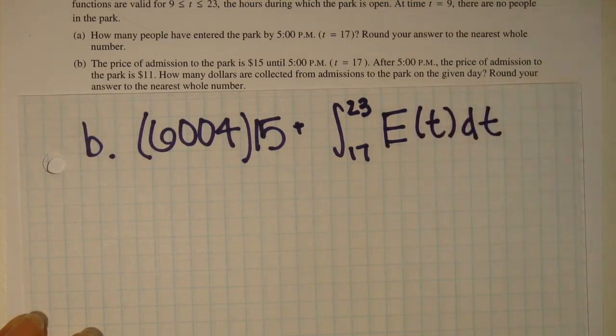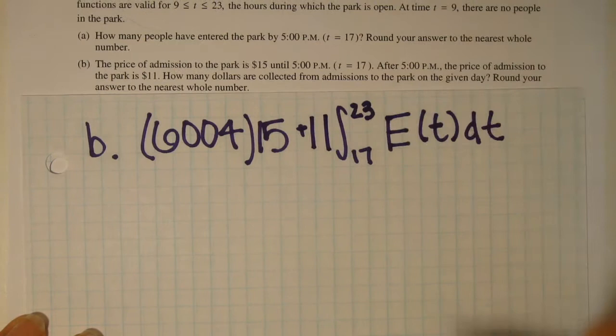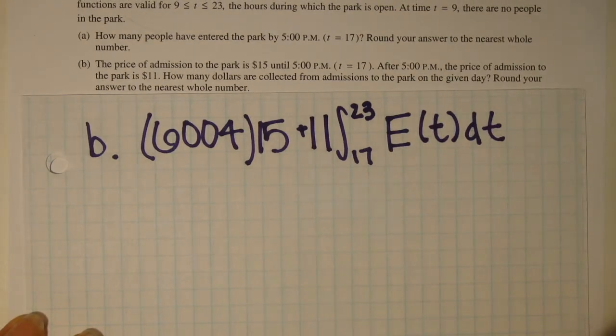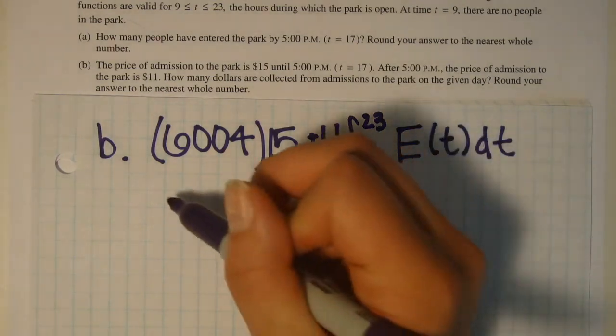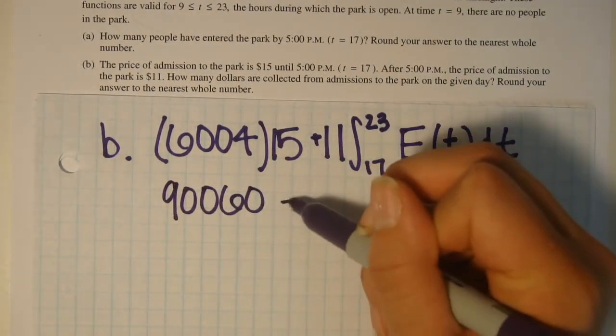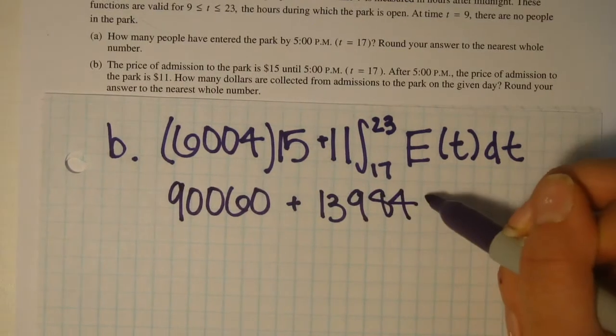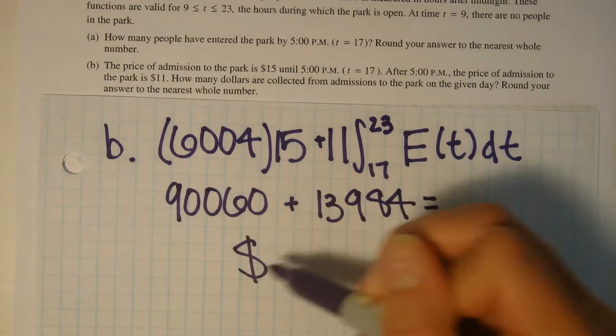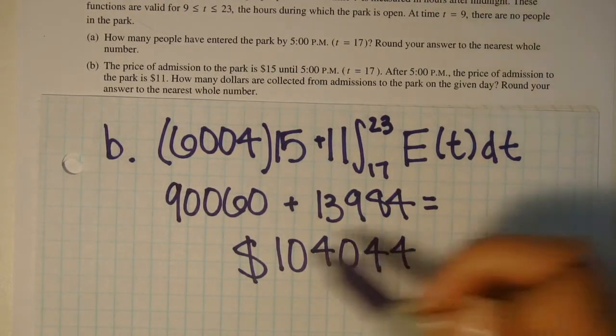And make sure you multiply this by 11 since it costs you $11 after 5 o'clock. So once you do this, you should get $90,060 plus $13,984. Add those together and you should get your final answer. And don't forget the dollar sign.